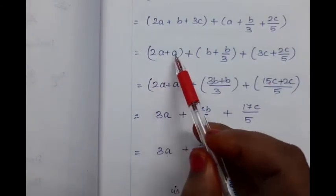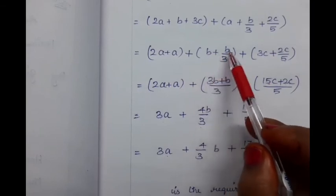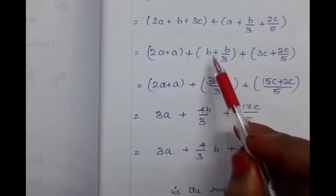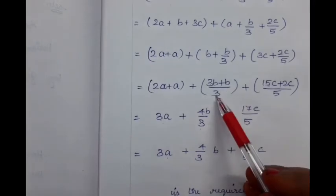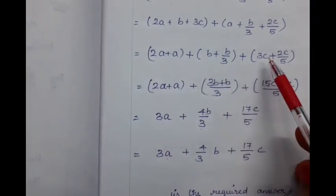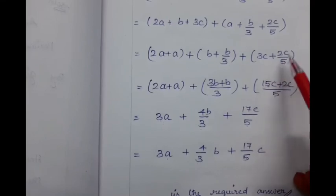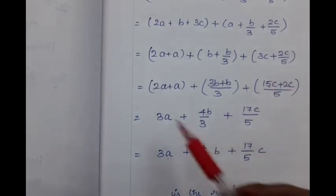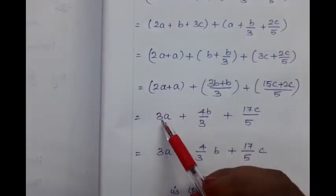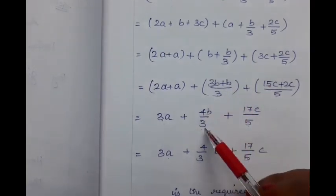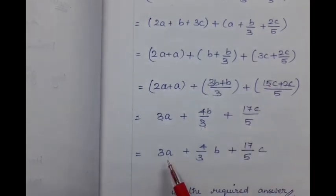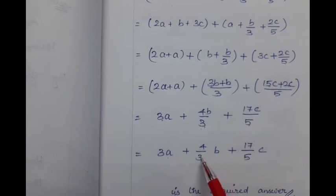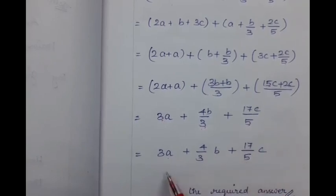Adding 2A with A is straightforward and gives 3A. For B plus B/3, we use cross multiplication: 3B plus B divided by 3, which gives 4B divided by 3. Similarly for 3C plus 2C/5: multiplying 3C by 5 gives 15C, so 15C plus 2C divided by 5 gives 17C divided by 5. Finally, we get 3A plus 4/3 B plus 17/5 C, which is the required answer.